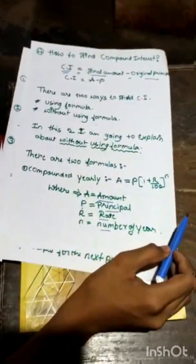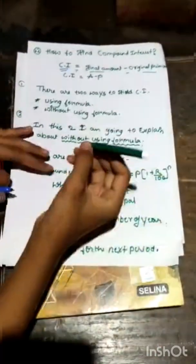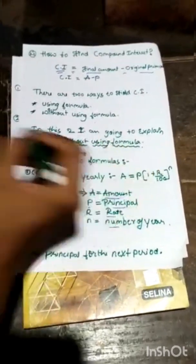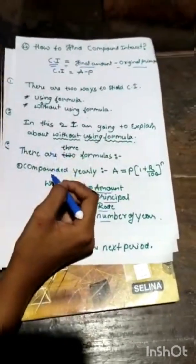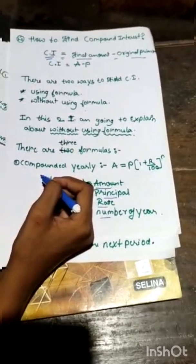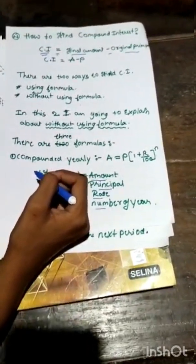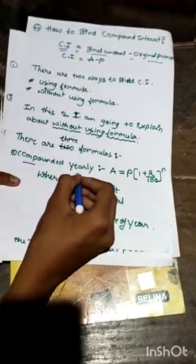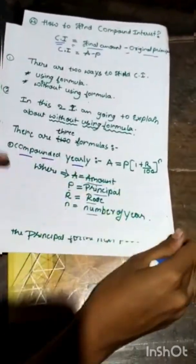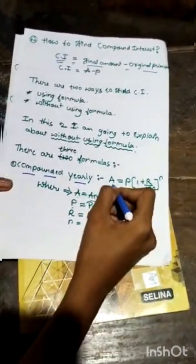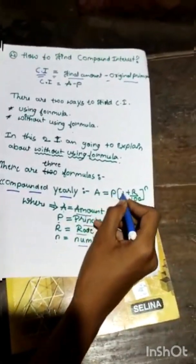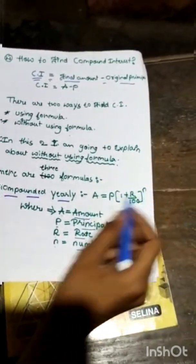There are three formulas. Just wait, I will correct it. There are three formulas. One is compounded yearly, one is half yearly, and one is rate in successive use. In this, I am going to explain only about one, that is compounded yearly.